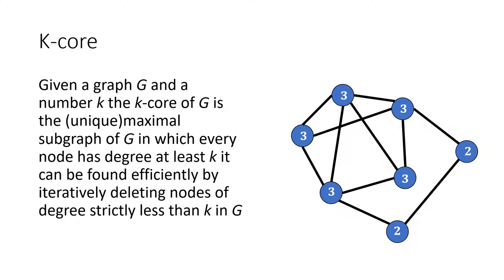The definition of a k-core is, given a graph G and a number k, the k-core of G is the unique maximal subgraph of G in which every node has degree at least k. It can be found efficiently by iteratively deleting nodes at a degree strictly less than k in G. This is a little complicated. So for this talk, let's just think about something a little bit more simple.